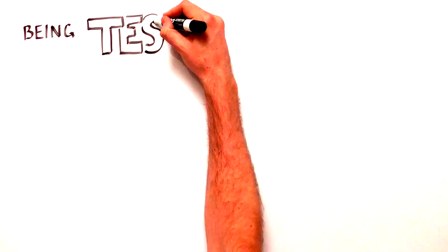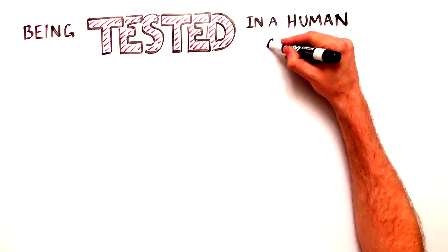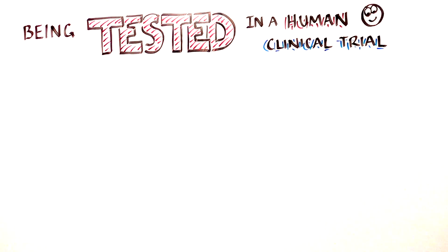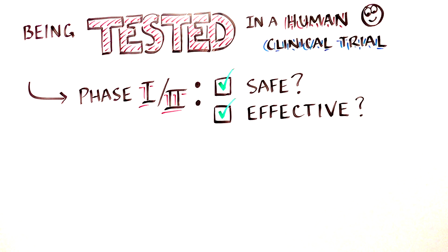This approach is currently being tested in a human clinical trial, the first to test the use of retinal progenitor cells to treat retinitis pigmentosa. This Phase 1-2A trial is designed to evaluate the safety of this therapy.